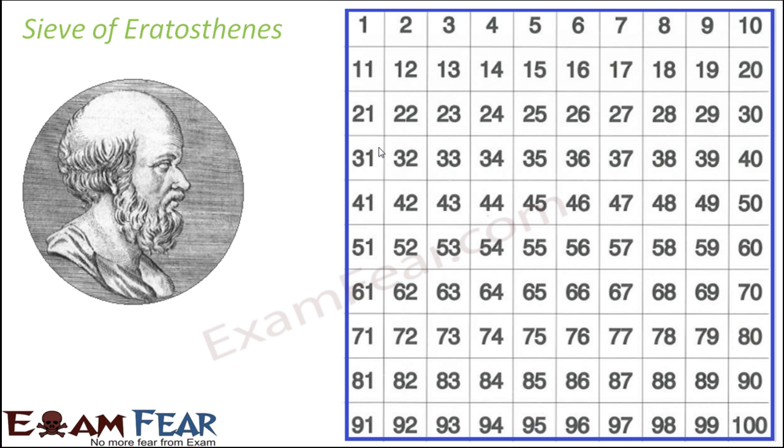By which you can actually determine how many prime numbers exist, or you can determine which of the numbers between 1 to 100 are prime numbers. Because all the non-prime numbers are going to be composite, since we just have these two sets of numbers: prime and composite. So let us see how the sieve was created.